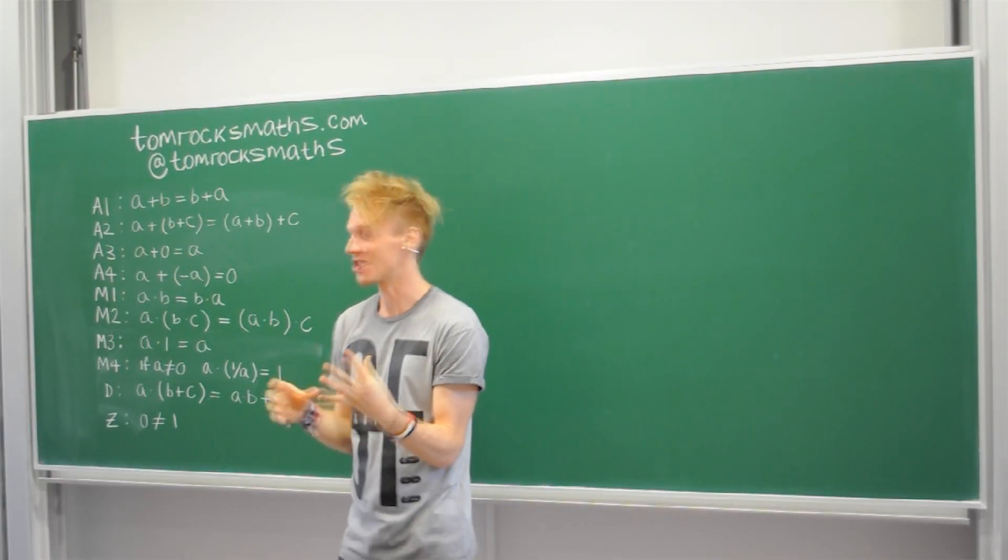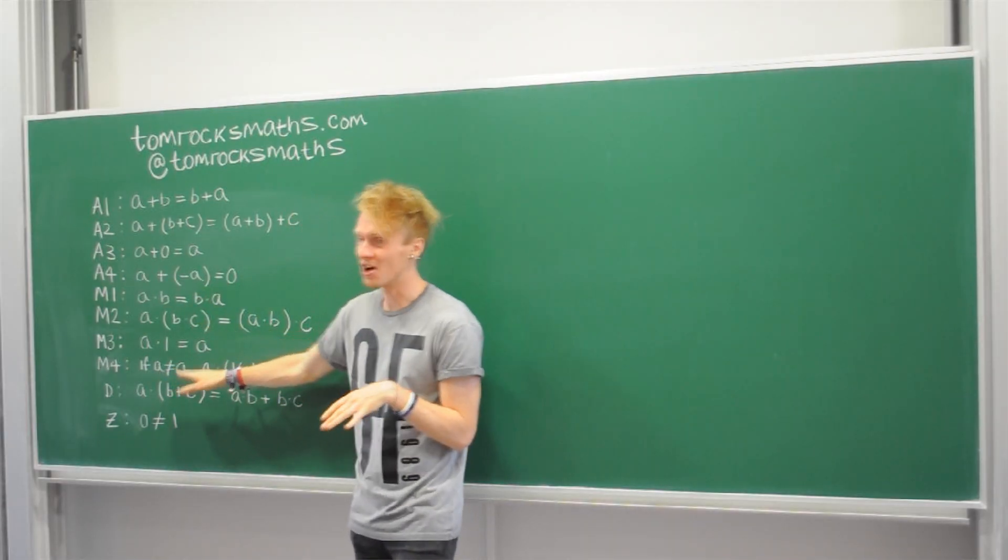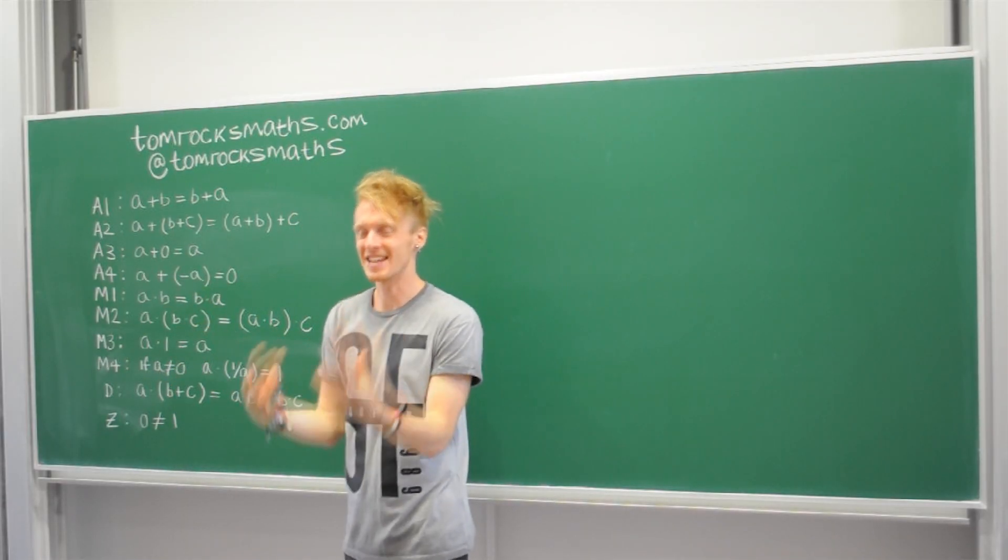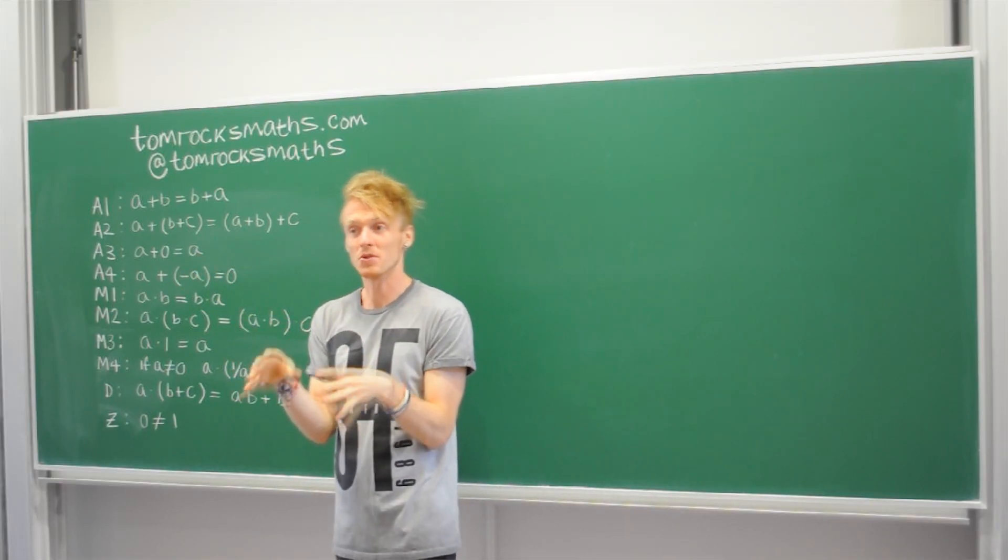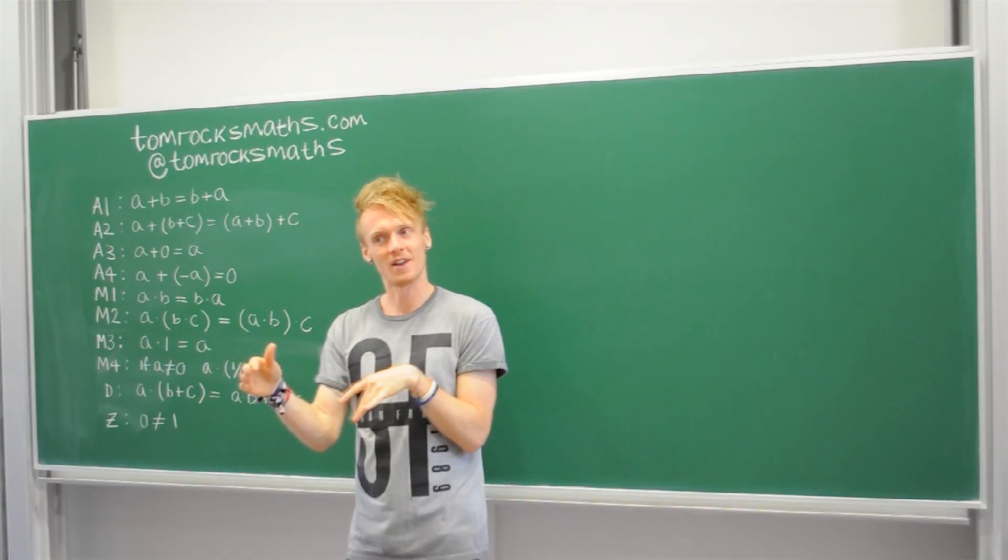Also, a very important part of this definition, which is that A must be non-zero. Because of course, you can never divide by zero in maths. No matter what anyone says, you cannot divide by zero. You can take the limit as you divide by zero. But you cannot actually divide by zero.